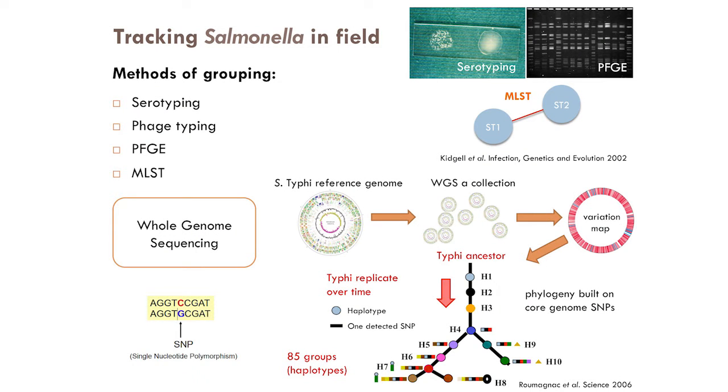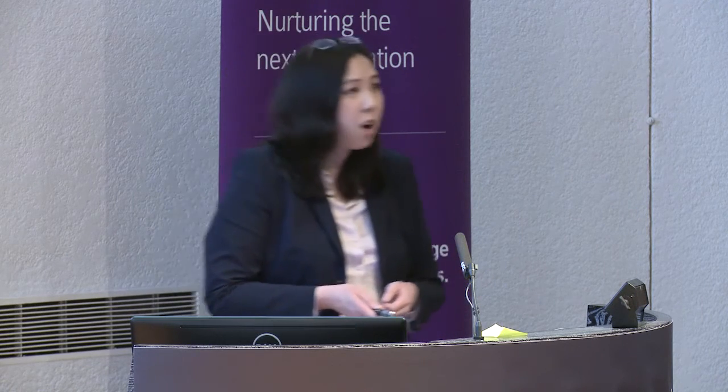How do you track Salmonella in the field? There are various ways, the main aim being to group organisms in a meaningful way to see how they're related — for example, whether they come from the same outbreak. Clinical microbiology reference laboratories around the world use methods such as serotyping, phage typing, and pulsed-field gel electrophoresis. These are useful, however they are not genotyping methods and do not provide any phylogenetic information or genotypic characteristics of the isolates.